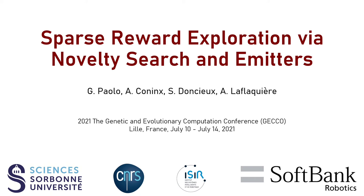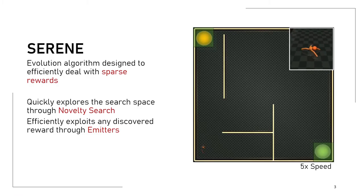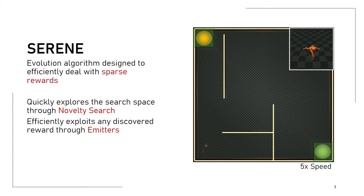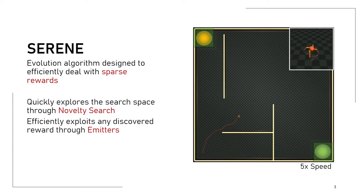Hi everyone, I'm Giuseppe Paolo and I'm here to present our latest paper, Sparse Reward Exploration via Novelty Search and Emitters. In this paper we introduce SERENE, a Divergent Search Evolution algorithm designed to efficiently deal with sparse rewards. It does so by separating exploration from exploitation of the reward, where exploration is performed through Novelty Search and exploitation is performed through Emitters.